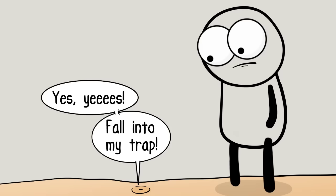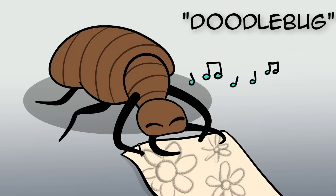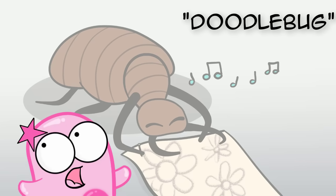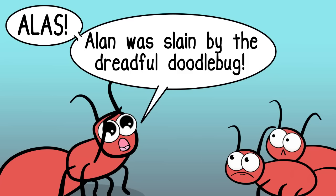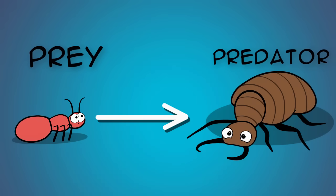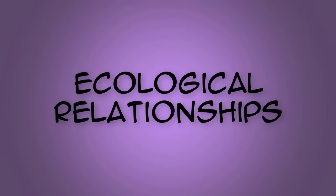Thankfully, antlions are small. In fact, 'doodlebug' is evidently another name for these things. I'm not exactly sure how you go from antlion to doodlebug, but okay — it's all relative. They're bad news for an ant, because the antlion is a predator of the ant; the ant is their prey. That's an ecological relationship right there, and that's what we're going to talk about: ecological relationships.